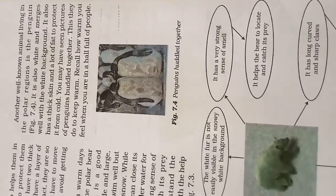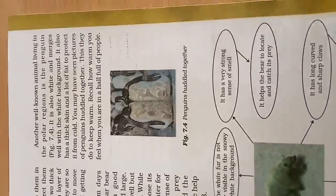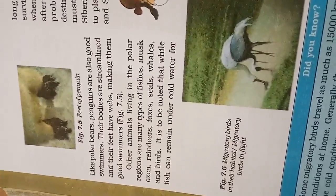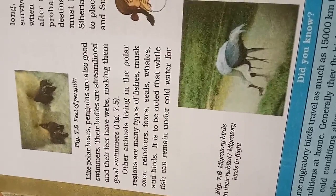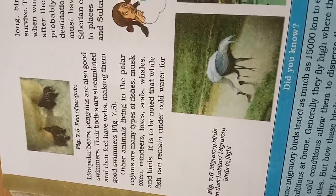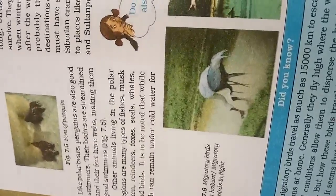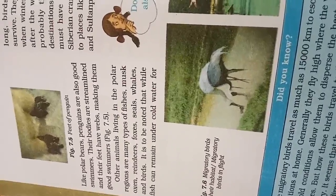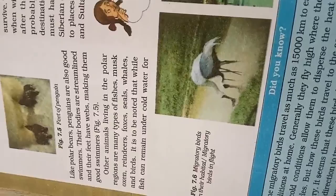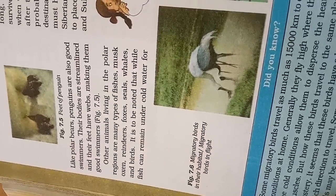These animals can survive in those conditions because of adaptation — naturally, like the polar bear, the penguin also has thick fur, which is why these animals can survive in those regions. Some other animals also live in those areas. Like polar bears, penguins are also good swimmers. Their bodies are streamlined and their feet have webs, making them good swimmers. Other animals living in the polar regions include many types of fishes, musk ox, reindeer, fox, seals, wolves, and others.